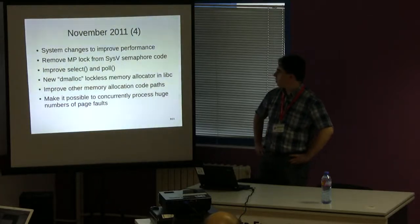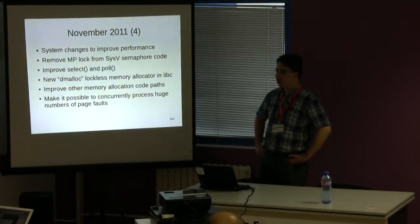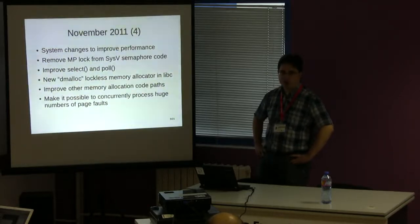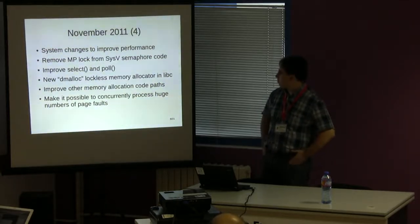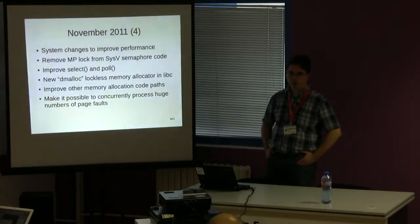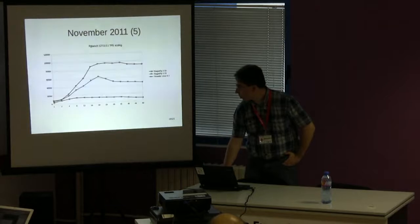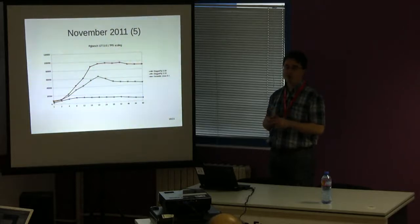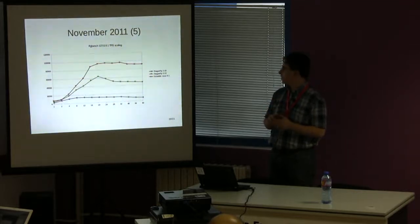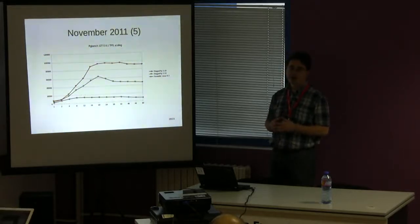We had bottlenecks in select and many performance issues in memory allocation paths. We also had to fix the VM subsystem — the virtual memory subsystem — to improve the number of page faults we could process at one time. Postgres uses a big shared memory segment, so it exercises memory allocation paths and virtual memory paths. We kept finding problems in these subsystems for a long time.